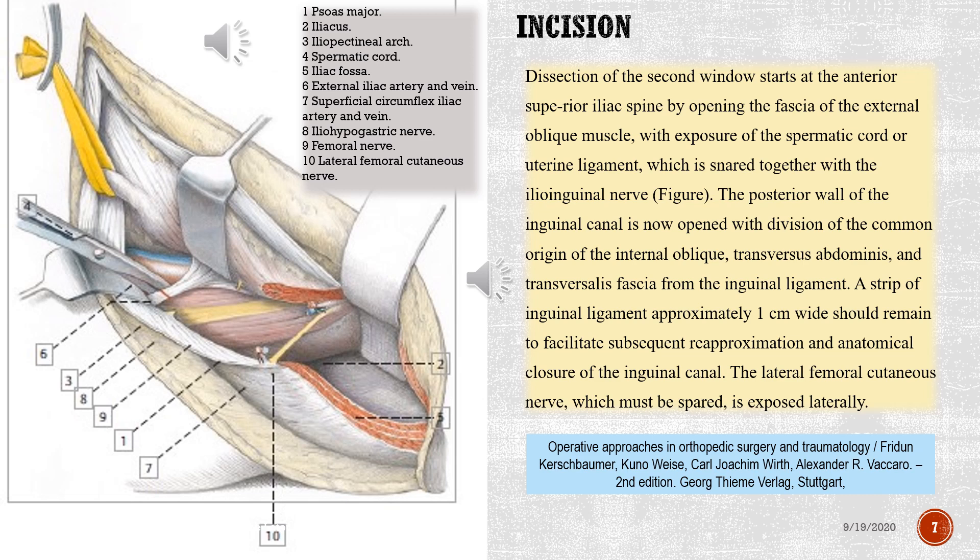Dissection of the second window starts at the anterior superior iliac spine by opening the fascia of the external oblique muscle, with exposure of the spermatic cord or uterine ligament, which is snared together with the ilioinguinal nerve. The posterior wall of the inguinal canal is now opened with division of the common origin of the internal oblique, transversus abdominis, and transversalis fascia from the inguinal ligament. A strip of inguinal ligament approximately 1 cm wide should remain to facilitate subsequent re-approximation and anatomical closure of the inguinal canal. The lateral femoral cutaneous nerve, which must be spared, is exposed laterally.